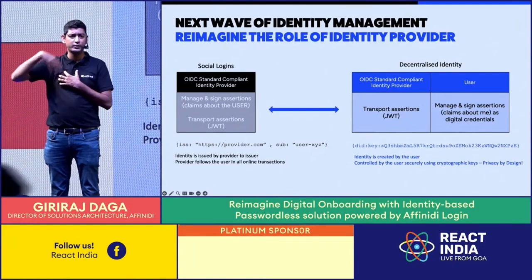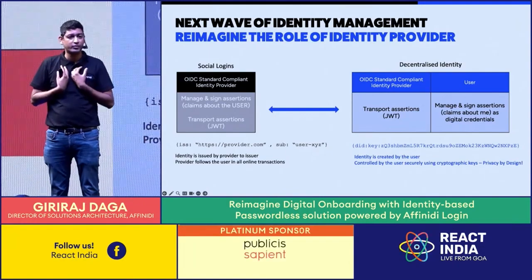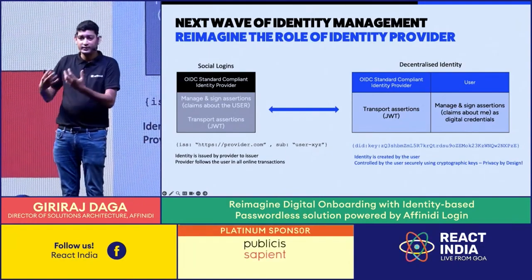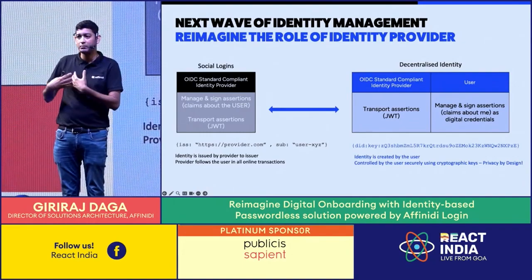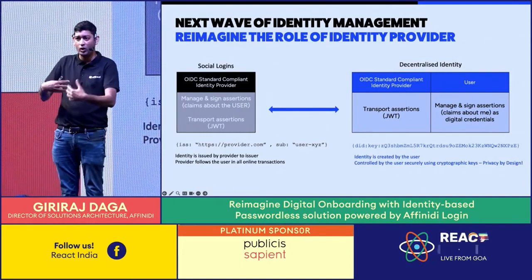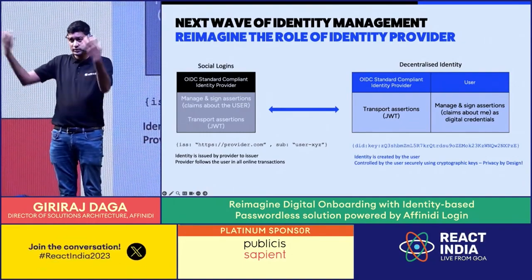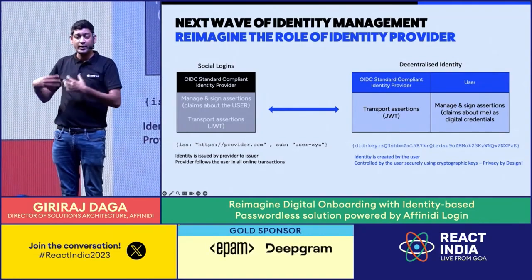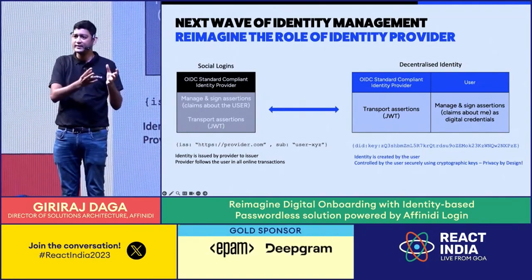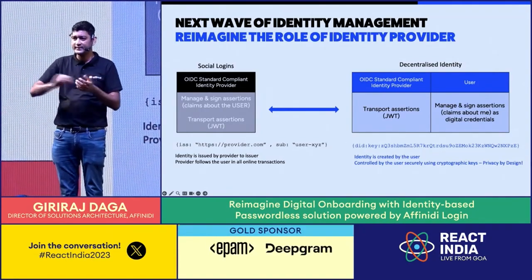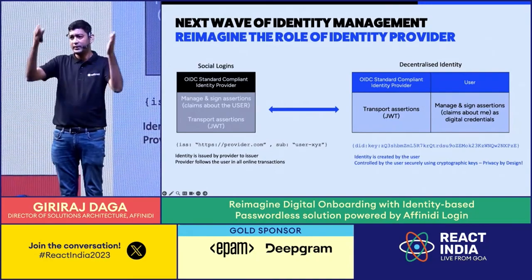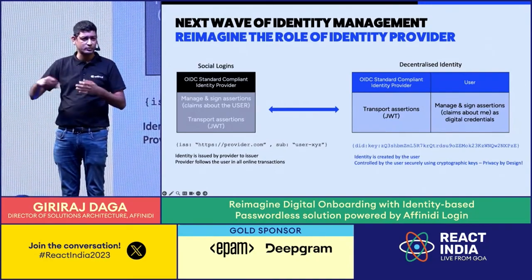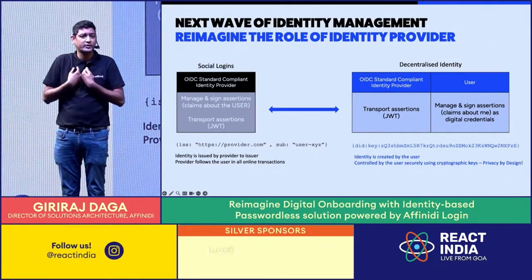There are other authoritative issuers who will issue this data to me — they could be government agencies, or my place of work can issue a credential that 'Giri works at Affinity.' That's a credential I can carry in my vault. I can manage the digital credentials issued to me and also self-sign them — I can attest that these are my credentials, just as we sign paper documents to confirm they're authentic.